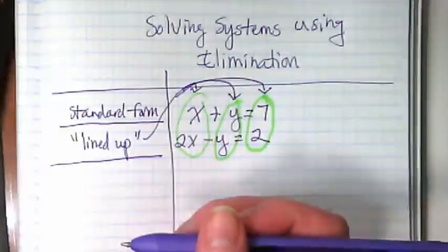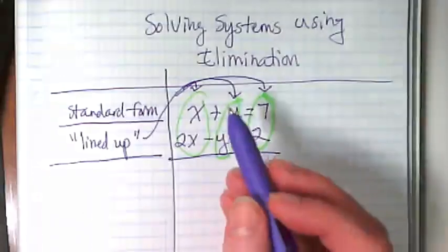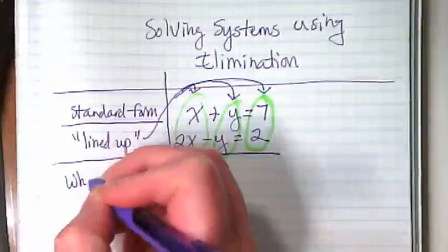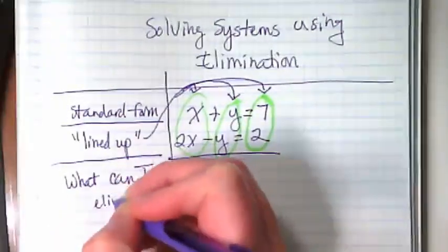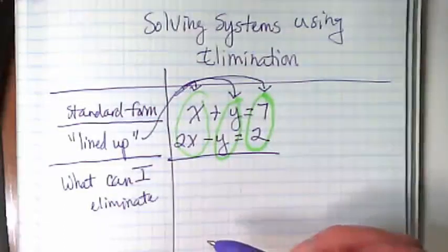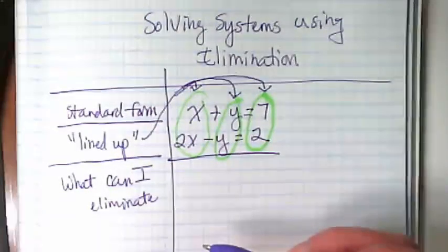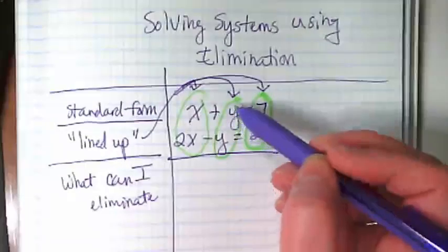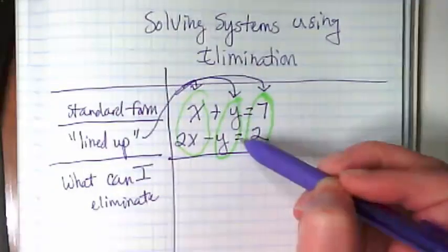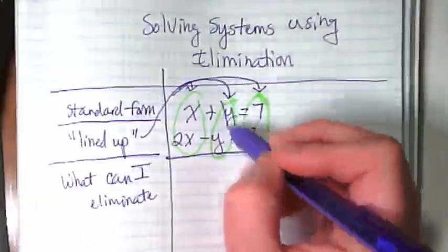Once I have a system where both equations are in standard form and I've lined them up where the X's and the Y's and the constants are lined up, I'm basically looking at this as an addition problem. I'm going to combine my like terms between the two equations by adding them. And I want to ask myself, what can I eliminate? When I put these together, what's going to get zeroed out? Exactly. I see right here, these Y terms are going to eliminate each other. I have a positive Y and a negative Y. And if I add those together, I get zero.